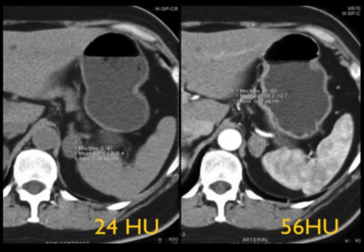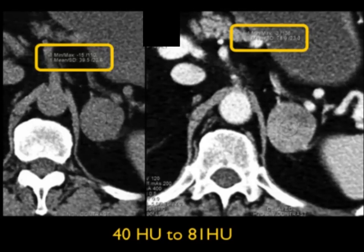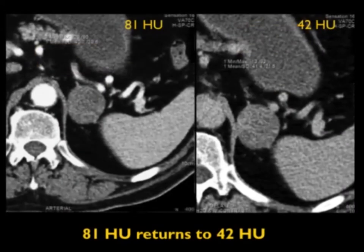Here's a nice example of a lipid-poor adenoma: non-contrast is 24 HU, so you can't call it an adenoma. It enhances to 56 HU at 60 seconds and then backs down to 28 HU — a very nice washout of more than 50%, confirming it's an adenoma. Another case: 40 HU on non-contrast, maybe something else. At one minute it goes to 81 HU, then returns to 48 by 15 minutes — greater than 50% washout, classic for an adenoma.